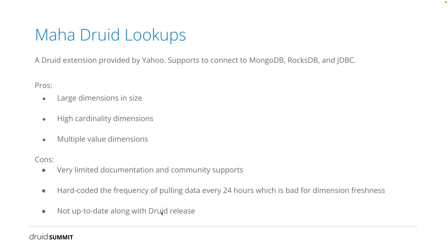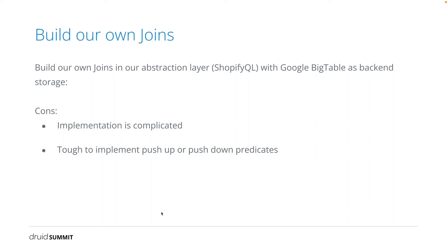The extension is developed based on Druid 0.17, which is not up to date. We need some features and backfixes from the latest version of Druid. Our front end does not send Druid native queries or Druid SQL to the Druid cluster directly. We have an abstraction layer to translate the SQL queries to Druid native queries. We thought about building our own joins in the abstraction layer, where the left-hand side of joins is a Druid table and the right-hand side is BigTable. BigTable supports app source, range queries, high throughput, and high cardinality dimensions. However, this custom implementation of joins in the abstraction layer is pretty complicated — it is not easy to implement push-up or push-down predicates.